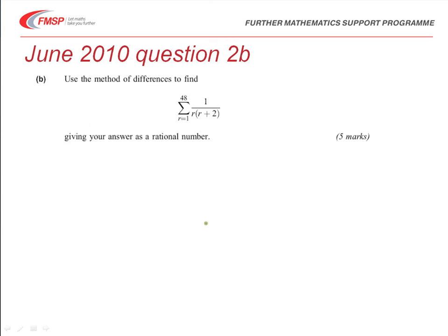Right, well the next part of this question then asks us to use the method of differences to find this summation. So, we can see that the summation that we are calculating involves the original expression that we had, of 1 over r(r+2).